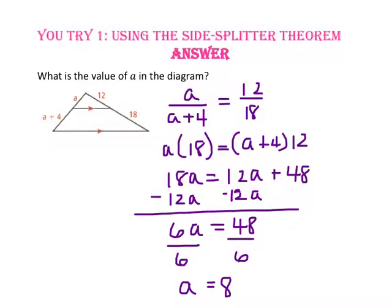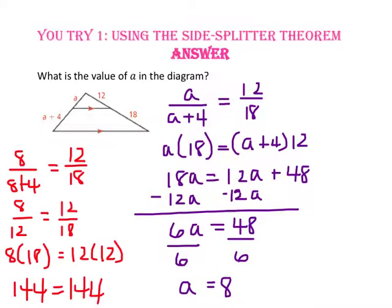Don't forget to check your answer by substituting 8 in for A into your original proportion. Since 144 does equal 144, we know we are correct.